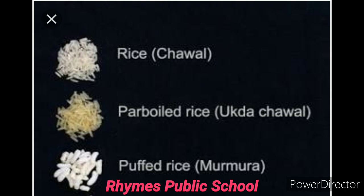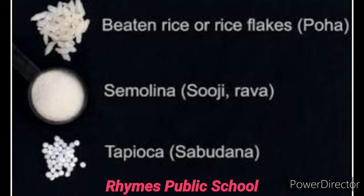And murmura — aap jaante hain murmura — usse English mein kaha jata hai puffed rice. Poha ko kaha jata hai beaten rice or rice flakes.